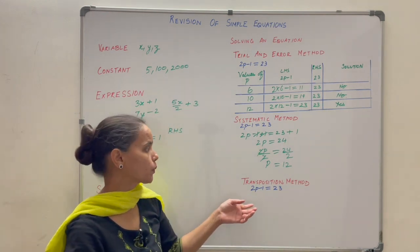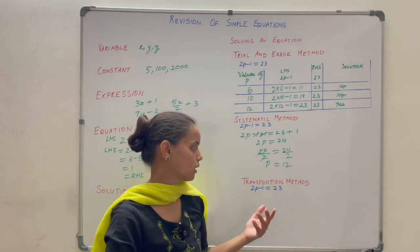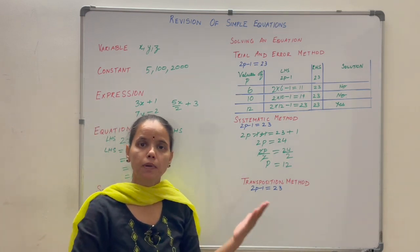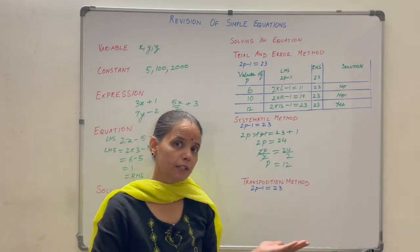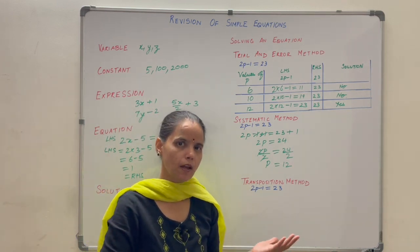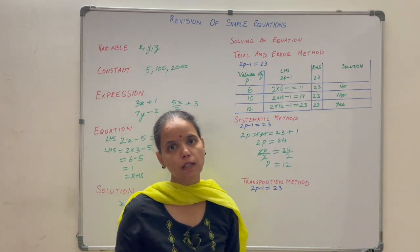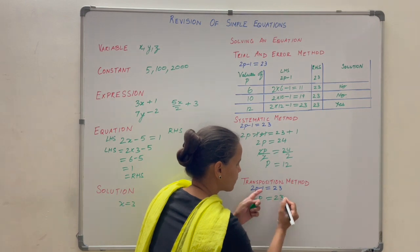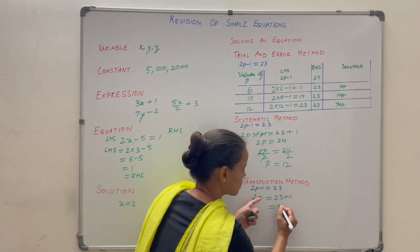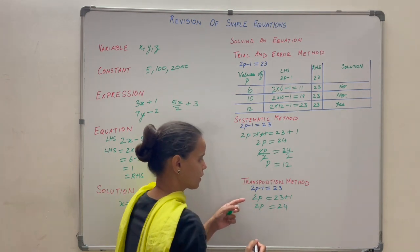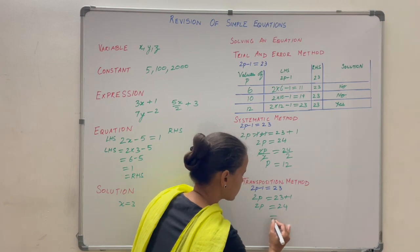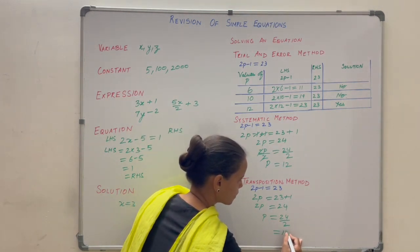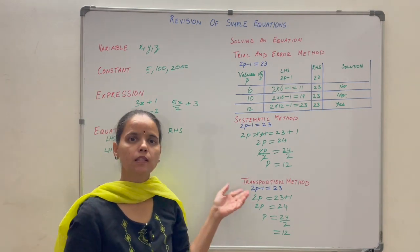One more method to solve equations is called the transposition method. When you change the side, the sign changes: plus becomes minus, minus becomes plus, multiplication becomes division, and division becomes multiplication. Interchanging left and right hand sides keeps the equation the same. Applying this to 2p minus 1 equals 23: take minus 1 to the right hand side — it becomes plus 1, giving 2p equals 24. Then 2 moves to the other side as division: 24 divided by 2 equals 12. The quickest method here is the transposition method.